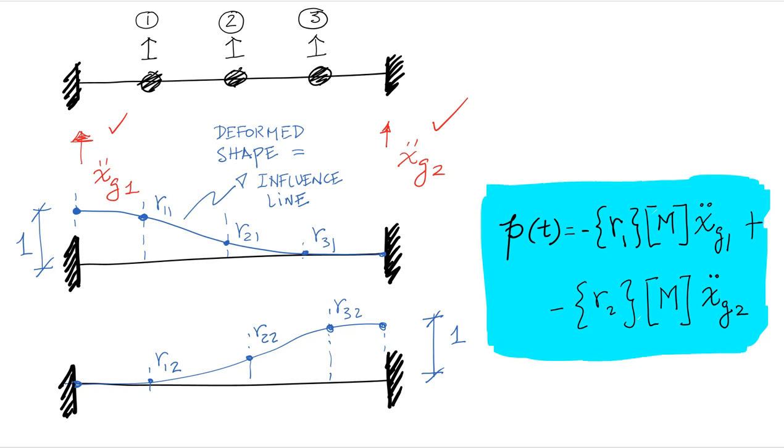So this is a very important case to understand. This can be generalized to basically any situation once you realize that these R vectors are nothing more than the influence lines of each support acting separately.